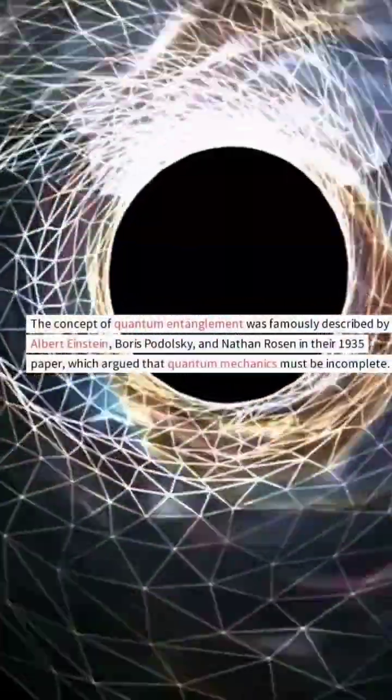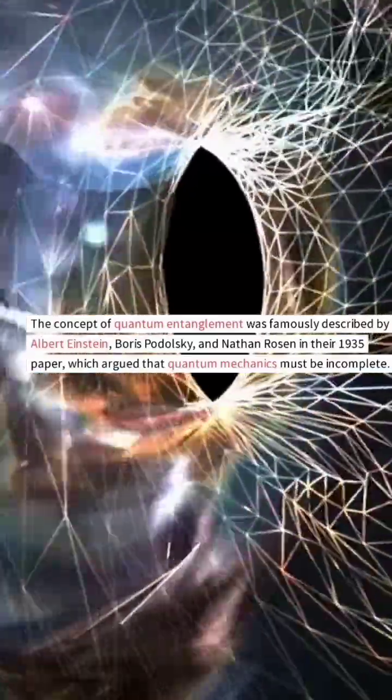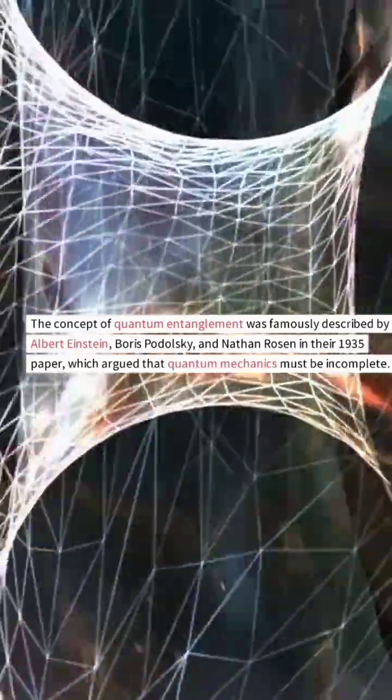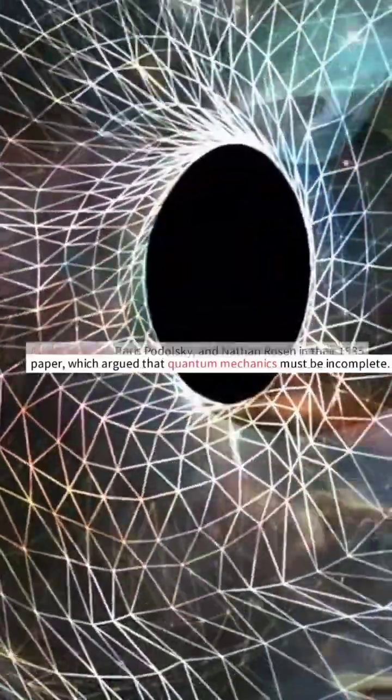The concept of quantum entanglement was famously described by Albert Einstein, Boris Podolsky, and Nathan Rosen in their 1935 paper, which argued that quantum mechanics must be incomplete.